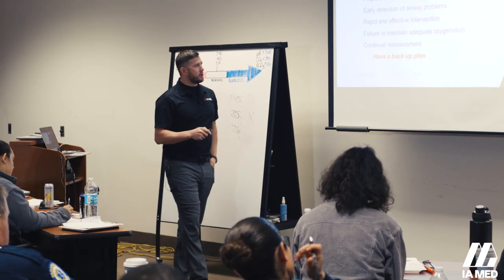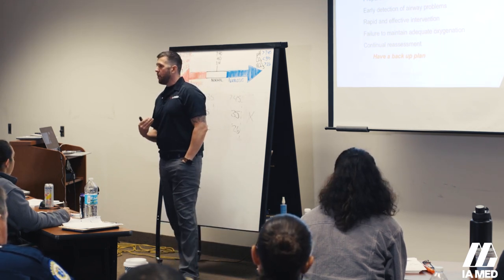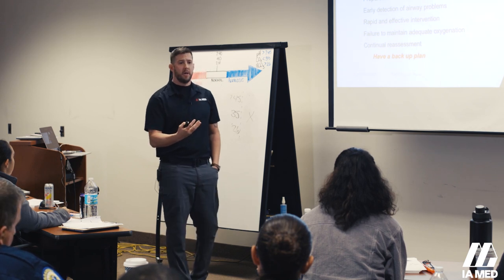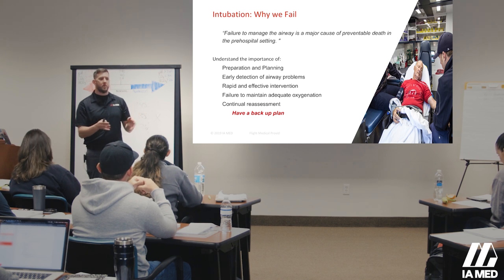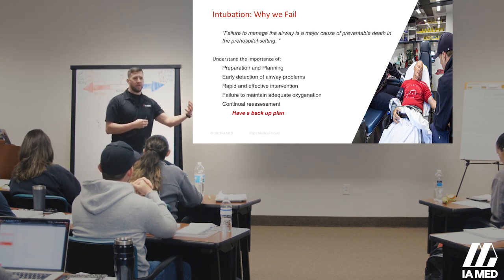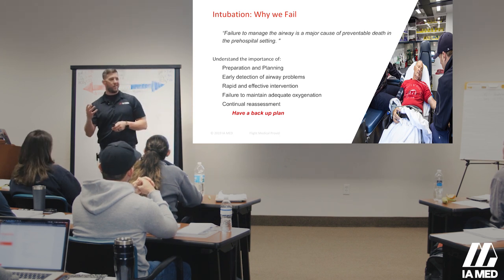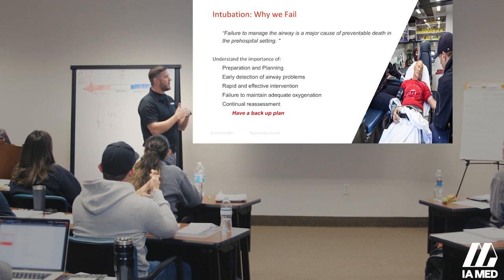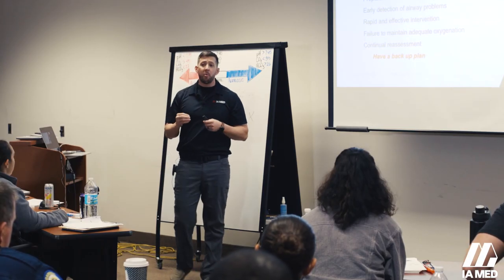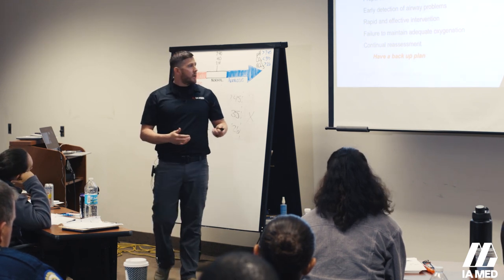Failure to maintain adequate oxygenation — is this a hypoxic respiratory problem where I can't get O2 in, or is this a CO2 problem where I can't get CO2 out? Is this an expiratory or inspiratory problem? That changes how we treat the patient. If it's hypoxic, give more FiO2 and PEEP to drive partial pressures. If it's a CO2 problem, they need more time to breathe out — longer expiratory times, maximize tidal volumes and P-plat. Continual reassessment — always check if your vent settings are improving the patient.